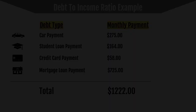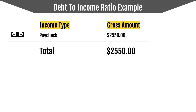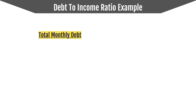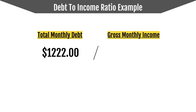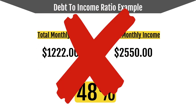Now let's look at their income. Their income type is a paycheck and they make $2,550 as gross income. We calculate their debt-to-income ratio: $1,222 divided by $2,550 equals a 48% debt-to-income ratio. This one is not good because it is over the 43%.